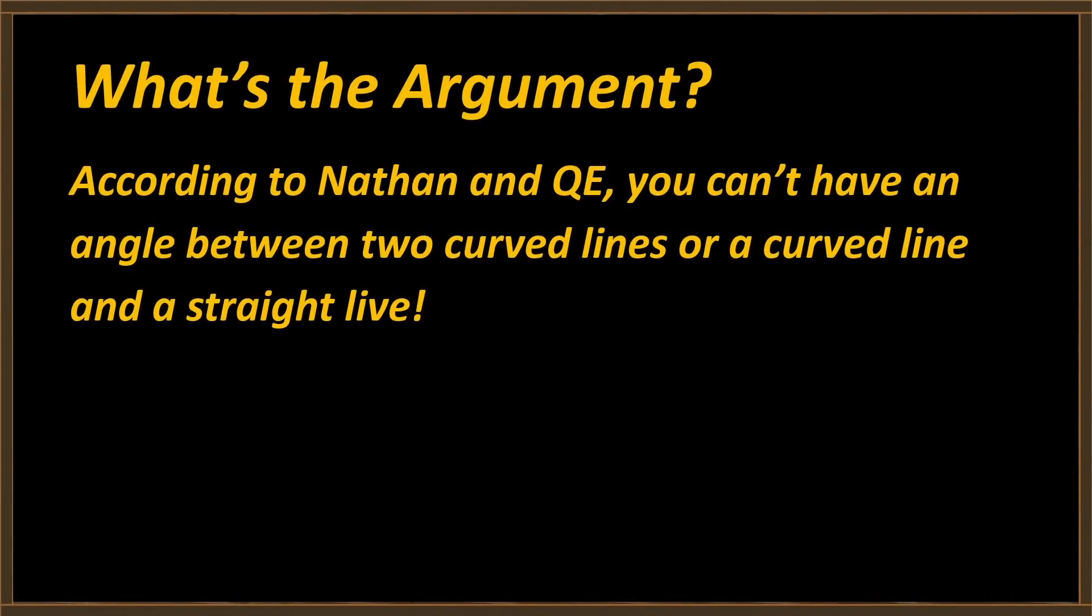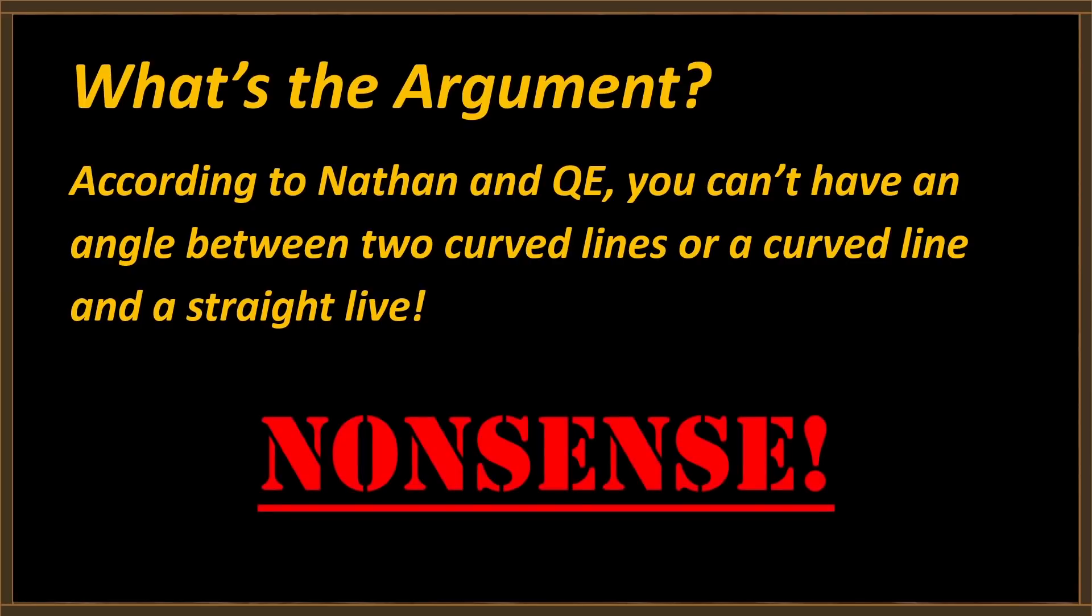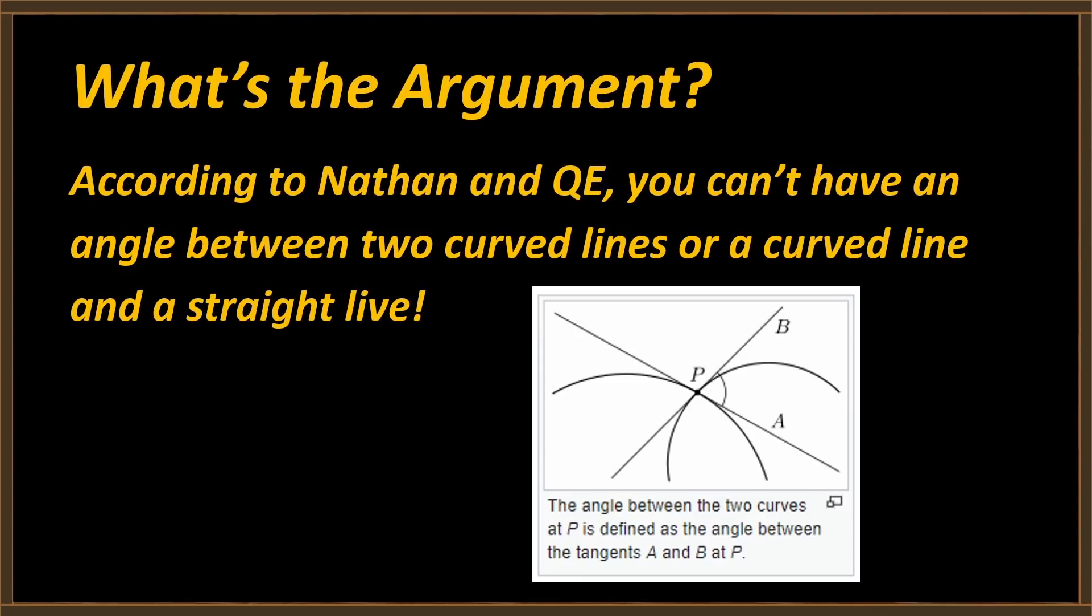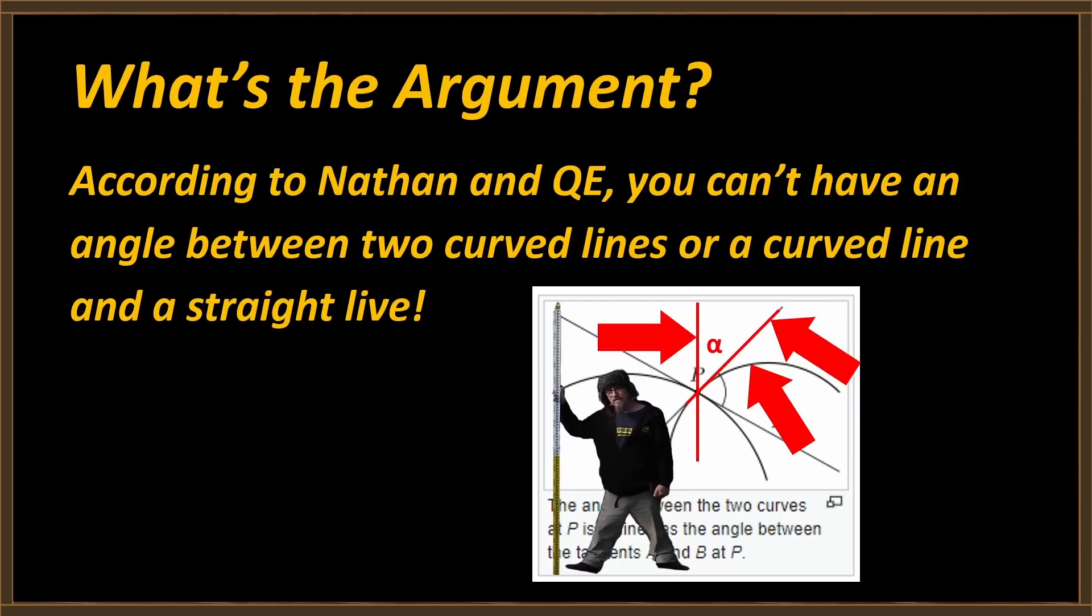So what's the argument? Well, according to Nathan and QE, you can't have an angle between two curved lines, or a curved line and a straight line. And that's just pure nonsense. This is taken straight out of Wikipedia. The angle between the two curves at P is defined as the angle between the tangents A and B at P. This is not a new concept. This has been around since the time of Euclid. But it doesn't have to be necessarily two curves. It can be a straight line and a curve. There's a straight line. There's a curved line. The angle between the straight line and the curved line is the angle between that line and the tangent to the curve at the point the line intersects the curve. By definition, that's the angle.